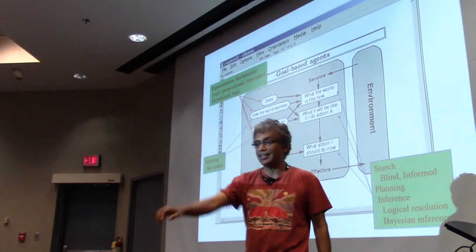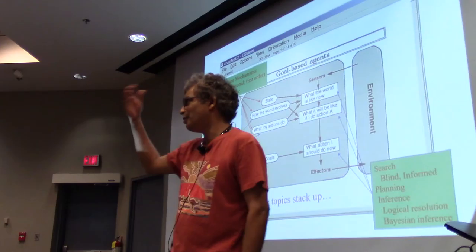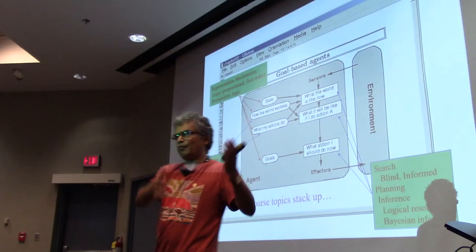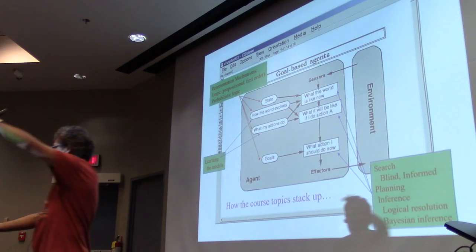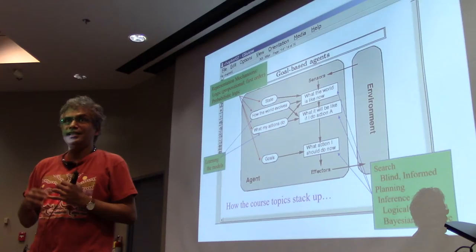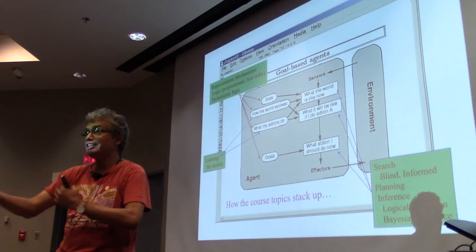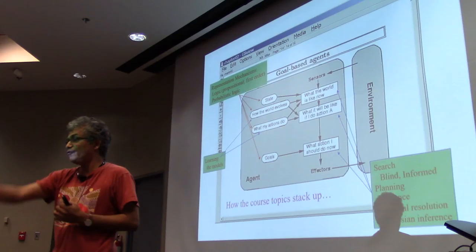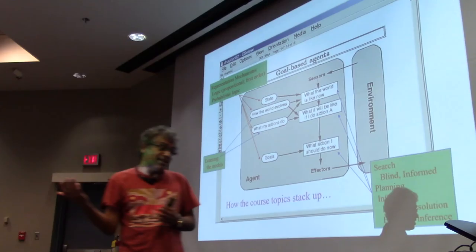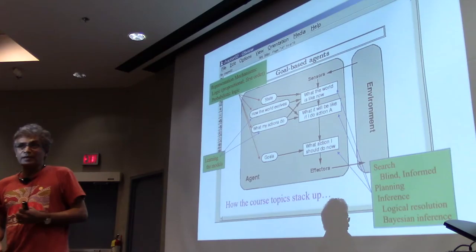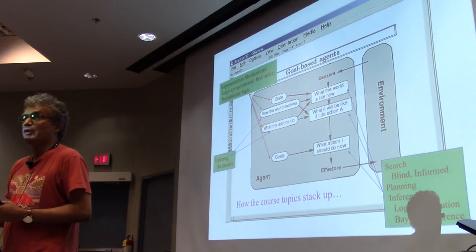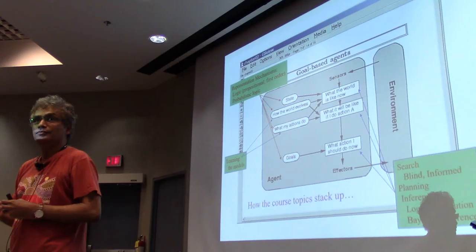Take Tower of Hanoi. Is it dynamic? No — priests aren't moving things around while you act. Is it predictable? Yes. So you can write it as a simple search problem. The backstory is that priests are trying to shift 64 disks from one peg to the third according to the rules, and when they succeed, the world will come to an end. Yet it's not dynamic and it's completely predictable. And that's a pretty hard problem.